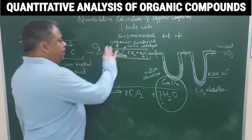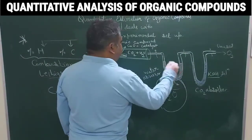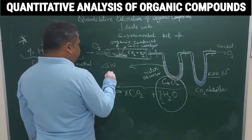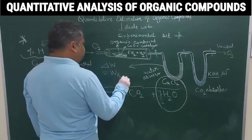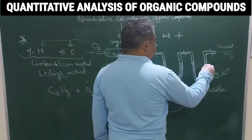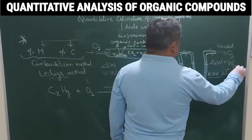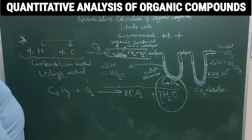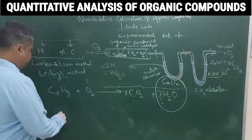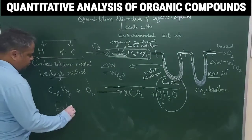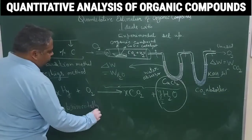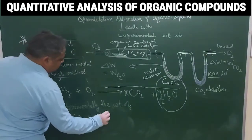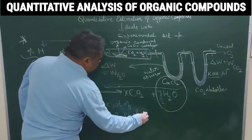After the reaction is complete, we take the initial weight and final weight of each U-tube. The change in weight of the first tube (CaCl₂ tube) gives the weight of water, and the change in weight of the second tube (KOH tube) gives the weight of CO₂. So experimentally, we can measure the weight of H₂O and CO₂ evolved.